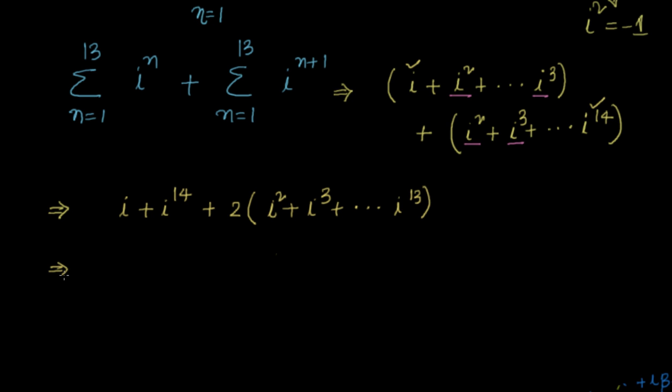So let us simplify this. We know i = i and i^14 is (i²)^7, and you know that is equal to -1. Anyway, we will do that in the next step. Plus 2 into...